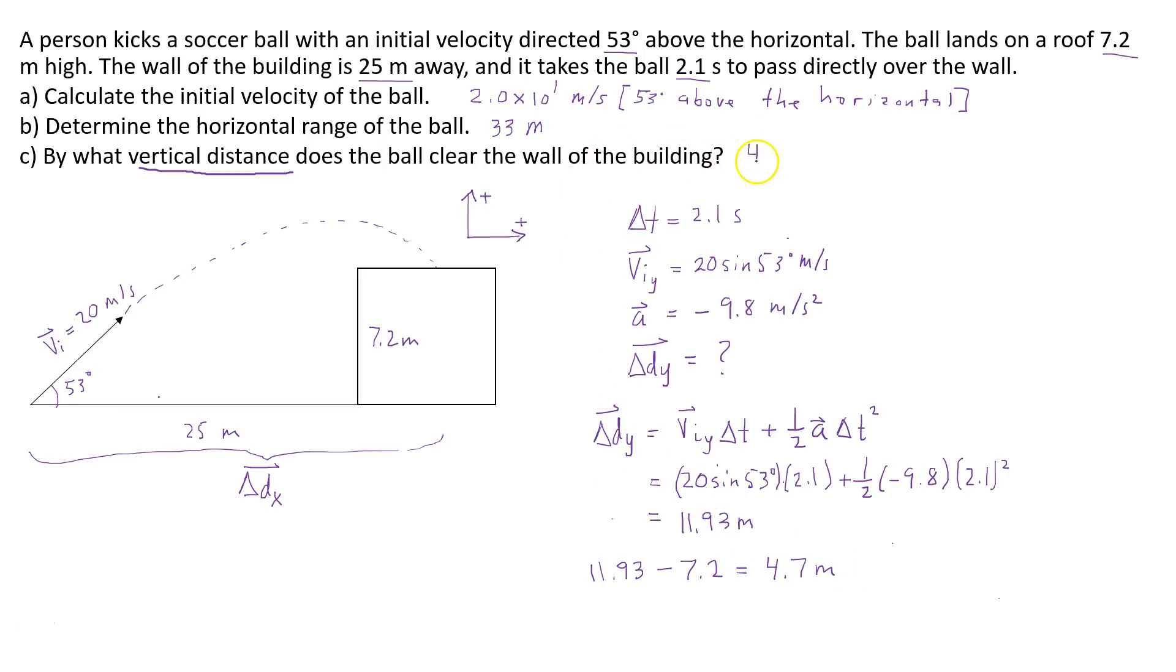The ball clears the wall by 4.7 meters. That's the final answer to the question. On the test, you would write a concluding statement. Therefore, the ball clears the wall of the building by a height of 4.7 meters.